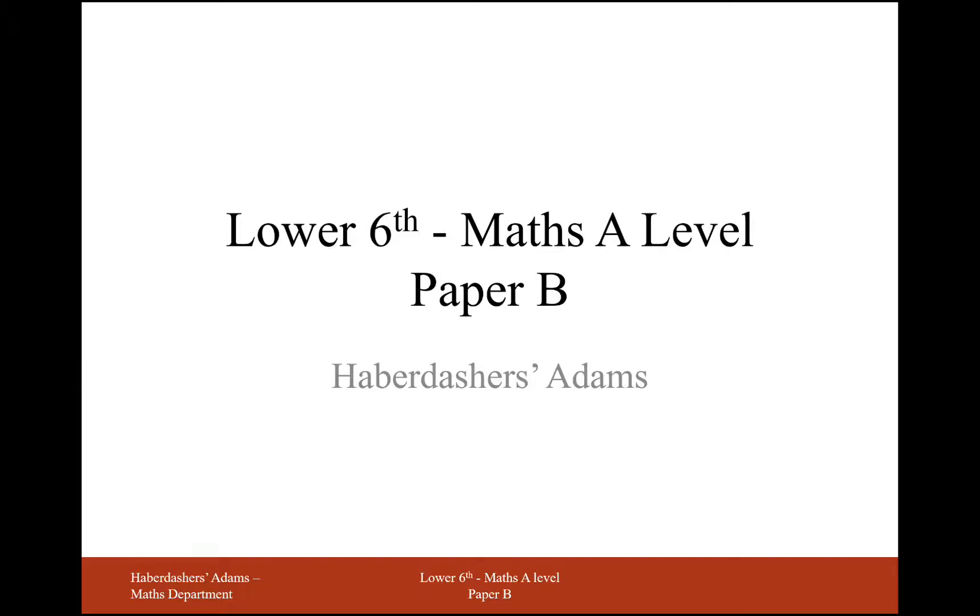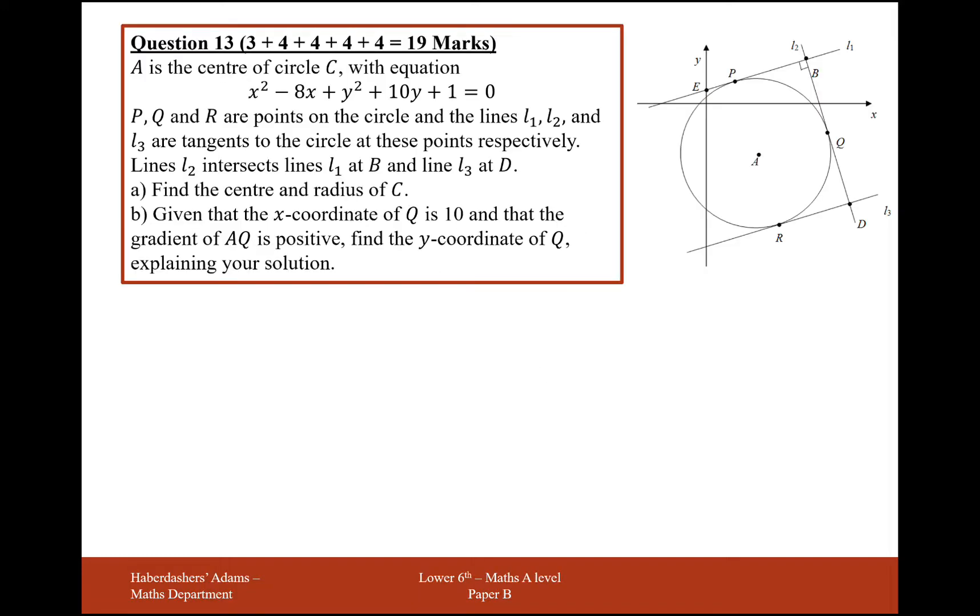Hello there, and welcome to Lower Sixth Maths A-level practice paper B. Here we're working on question 13, a circles question. So we have an equation of a circle that's called C, and we've got P, Q, and R that are points on the circle. L1, L2, and L3 are tangents to the circle.